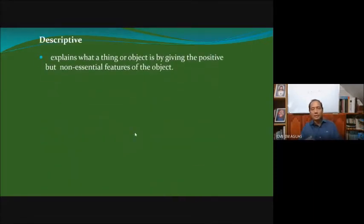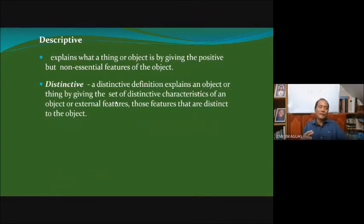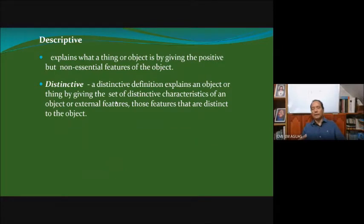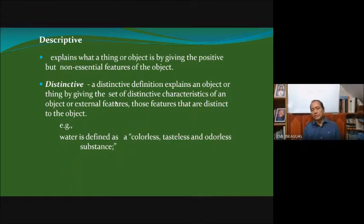Because we cannot always give an essential definition, instead we can give a descriptive definition, which defines a thing by giving positive but possibly non-essential features. There are several types of descriptive definition. One is the distinctive definition, where we explain the object by giving a set of distinctive or unique characteristics that distinguish it from other objects. For example: 'Water is a colorless, tasteless, and odorless substance' — 'substance' is the genus, and colorless, tasteless, odorless are the distinctive characteristics.